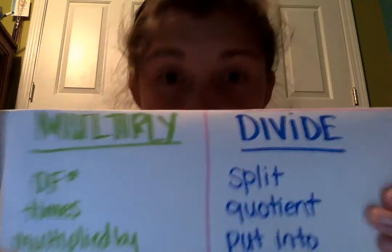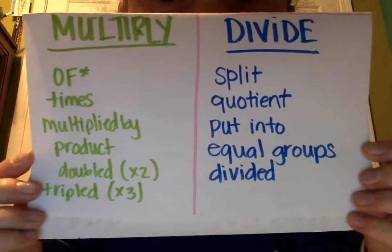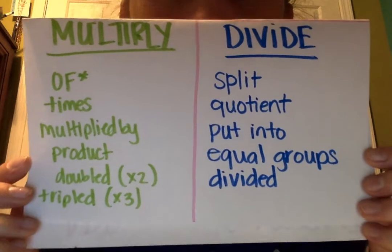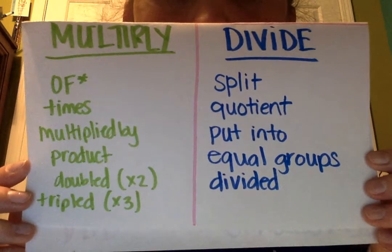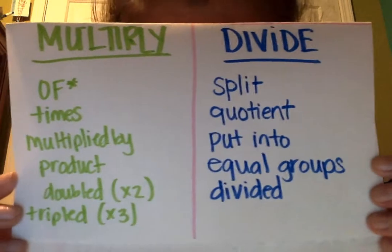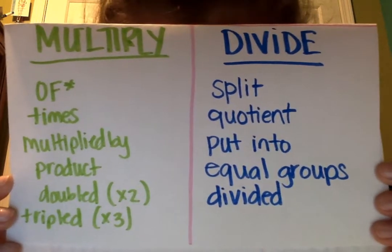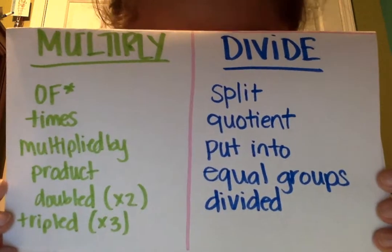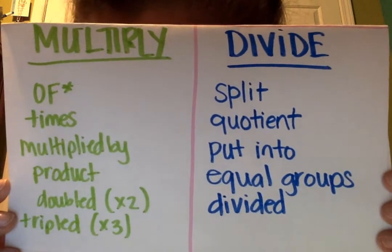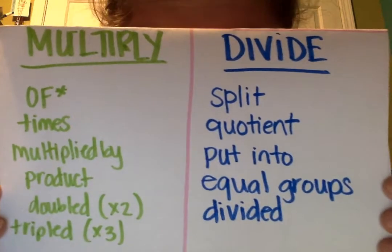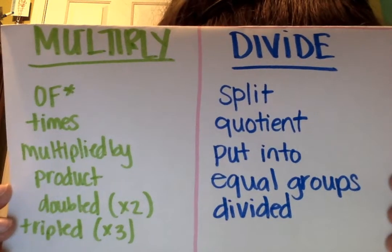Looking into multiplying and dividing. For multiplying: of, times, multiplied by, product. Doubled means that you're multiplying by two. Triple means that you're multiplying by three. Anytime that we multiply, we are also getting bigger. The most important word you need to remember is the word 'of.'